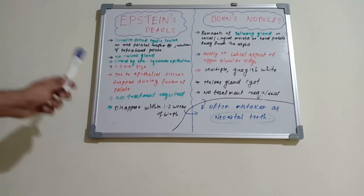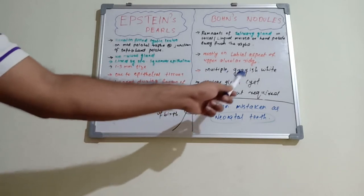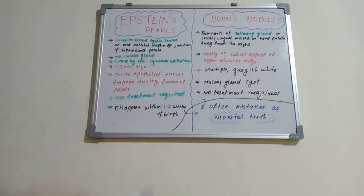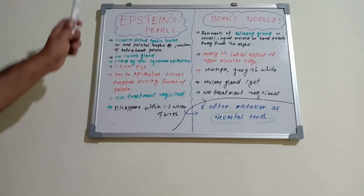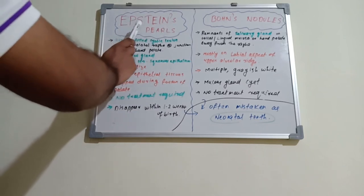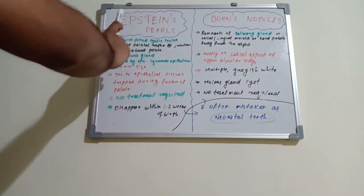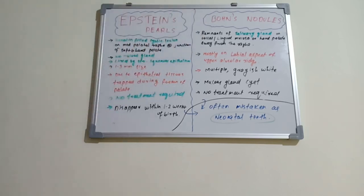Epstein pearls are lined by stratified squamous epithelium. Bohn's nodules are mucous gland cysts. In both cases, there is no requirement of treatment. Epstein pearls mostly disappear within one to two weeks and Bohn's nodules are also self-correcting. Both are identified and reported by these people, that is Epstein and Mr. Bond.